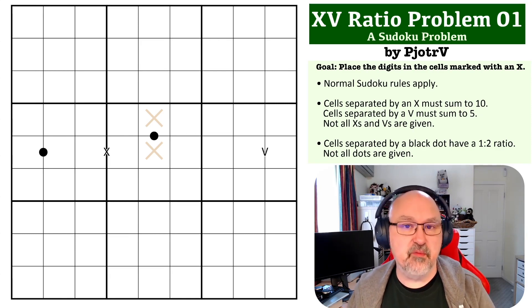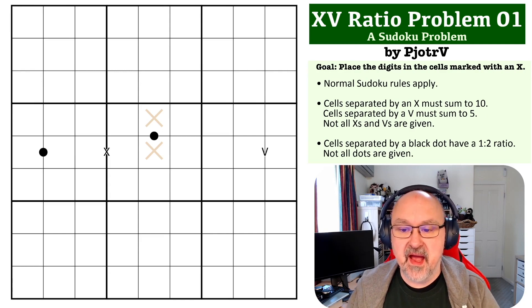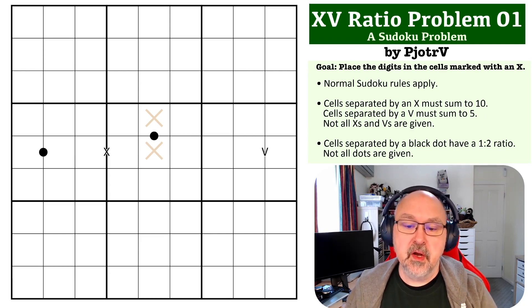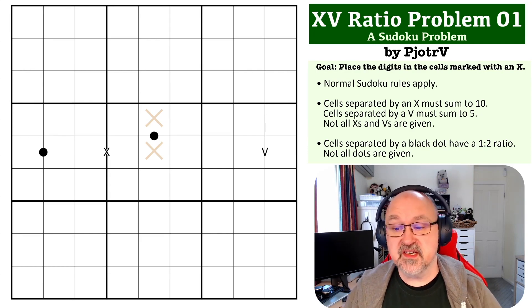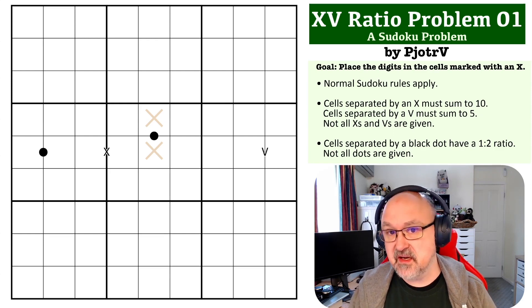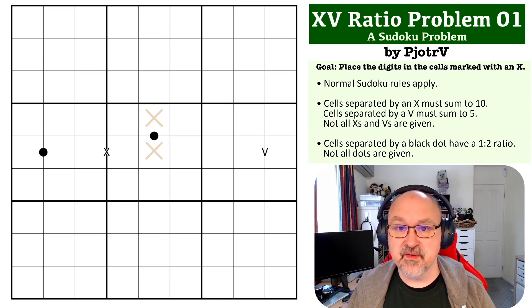So this is an XV ratio problem and I really like this one. Normal Sudoku rules apply. Cells separated by an X must sum to 10, cells separated by a V must sum to 5, and cells separated by a black dot must have a ratio of 1 to 2 or one must be double the other.